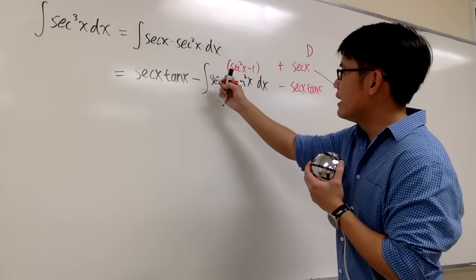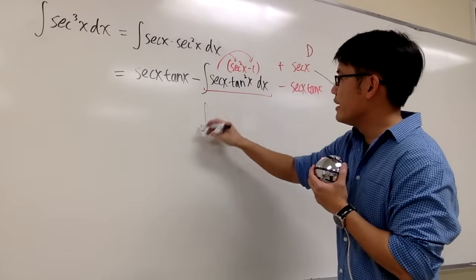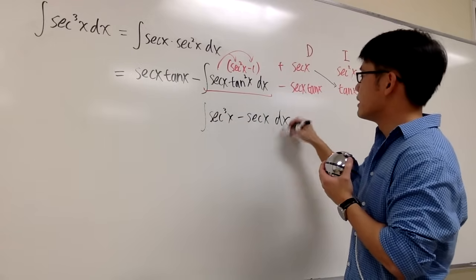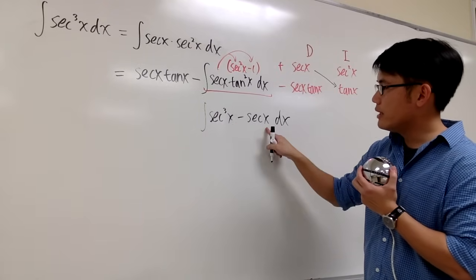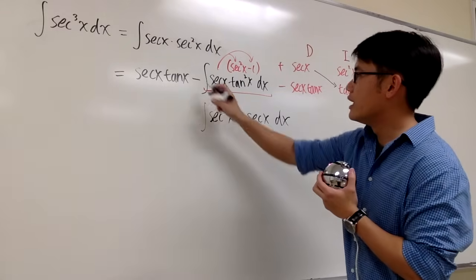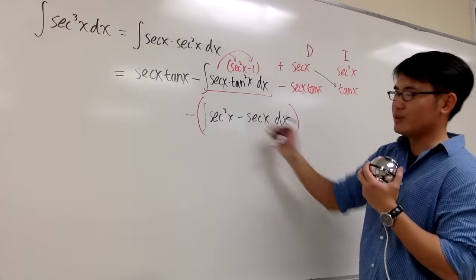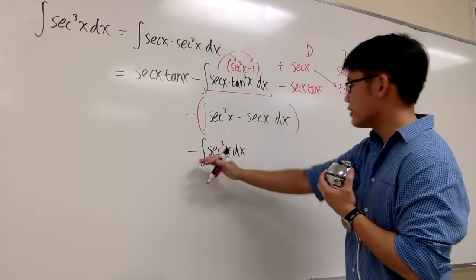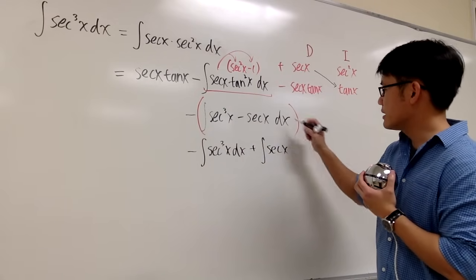Let's focus on this integral and distribute secant x into the parentheses. We get the integral of secant to the third power x, and then secant x times negative 1 gives minus secant x dx. We have the integral of a difference, which we break apart as the integral of the first minus the integral of the second. Because we have a minus in front, distribute the negative inside: we get negative integral of secant to the third power x dx, plus the integral of secant x dx.